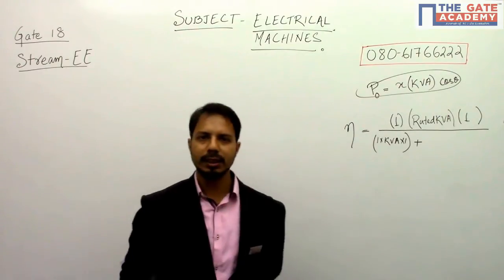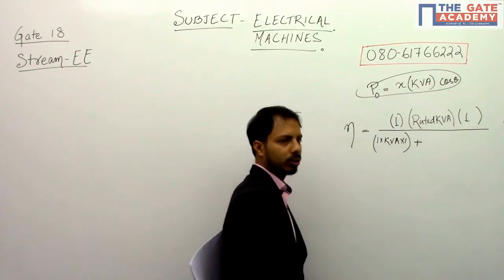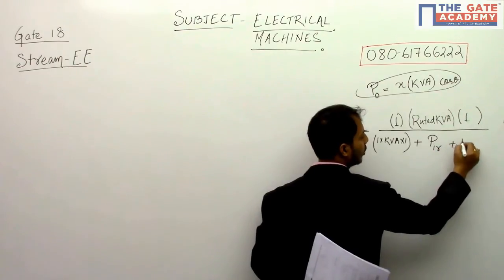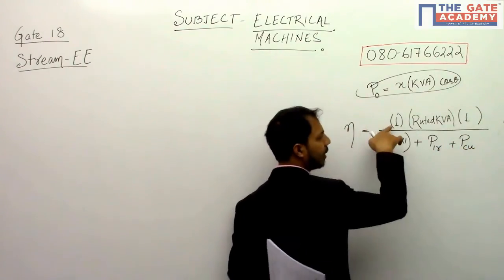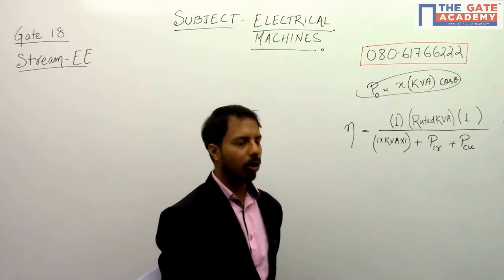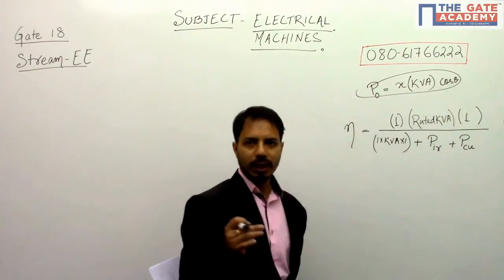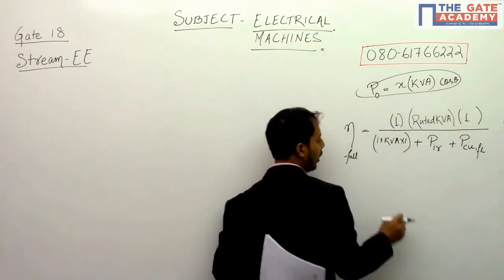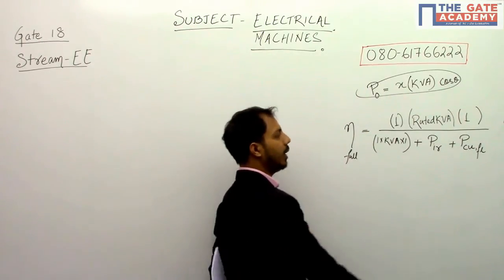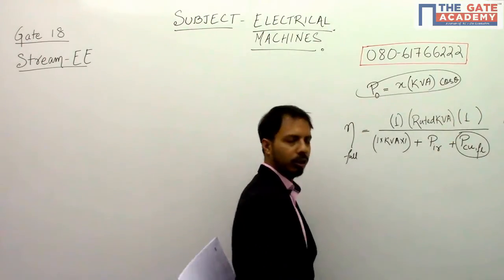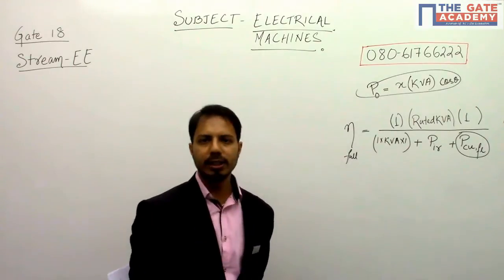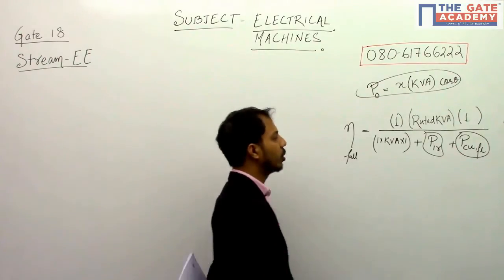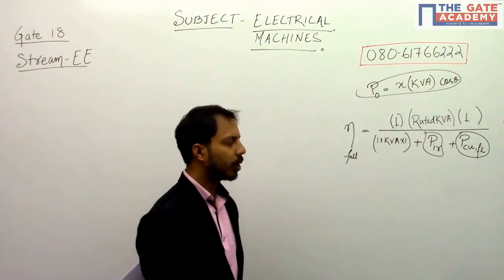There are two types of losses: iron loss and copper loss. Iron loss is generally constant because the input voltage is constant — that is why it is also called constant loss. Copper loss is variable loss. Since we need full load efficiency, we find the copper loss at full load condition.